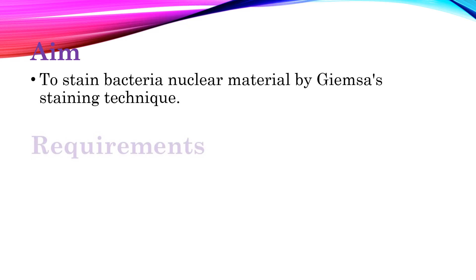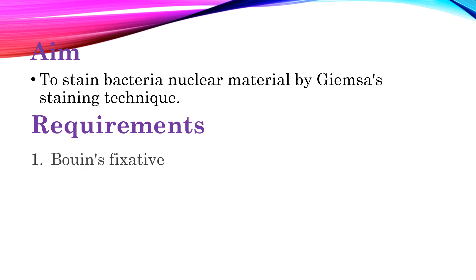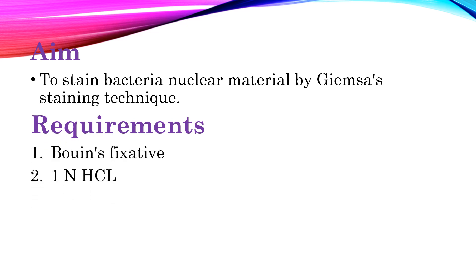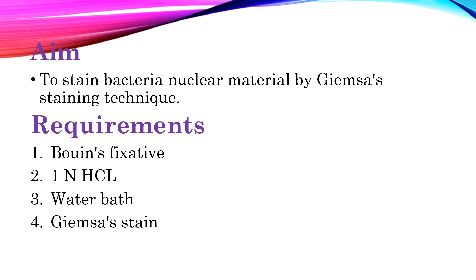Now let's see the requirements. Here we need Bouin's fixative, one normal HCl, a water bath, Giemsa stain, and a cell suspension. These are the basic requirements which we need for staining of nuclear material by Giemsa's staining technique.